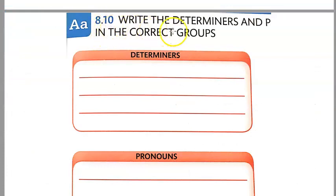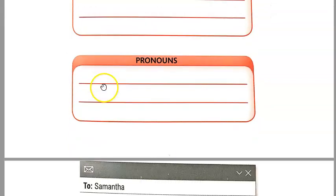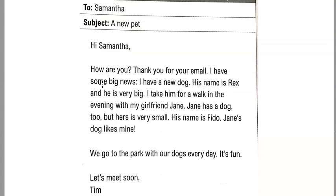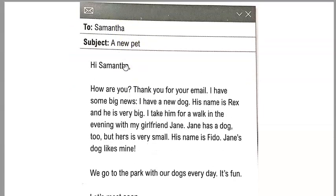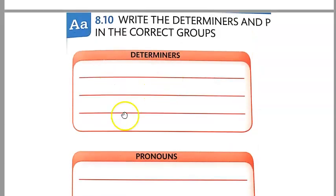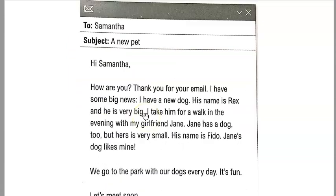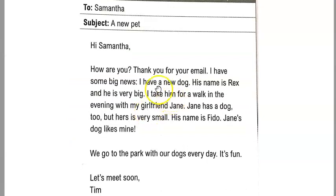So in 8.10, you're going to write the determiners and pronouns in the correct groups. Put a heading 'Determiners' and then another column 'Pronouns.' Then I need you to read this email and put all the determiners in one column and all the pronouns in the other. Go ahead and pause the video and do that. And when you're finished, turn in all your answers.